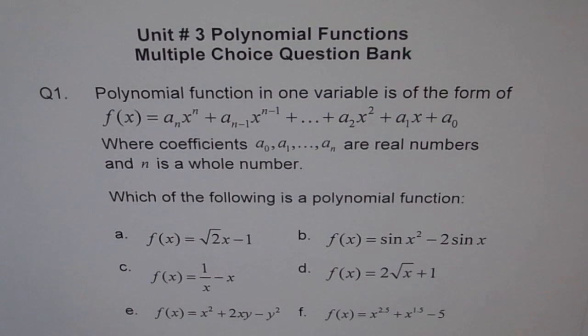Option e: f(x) = x² + 2xy. We have two variables here, so it is not a polynomial in one variable. And option f: f(x) = x^2.5. The exponent 2.5 is not a whole number. So that is the reason for others not being polynomial functions. I hope you understand it. Move on to question number 2.